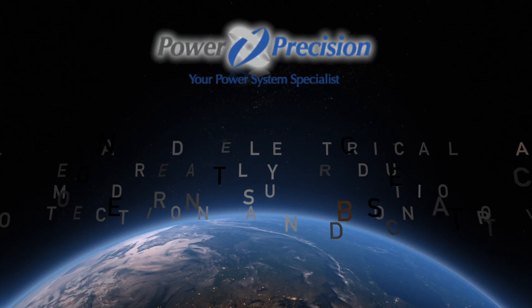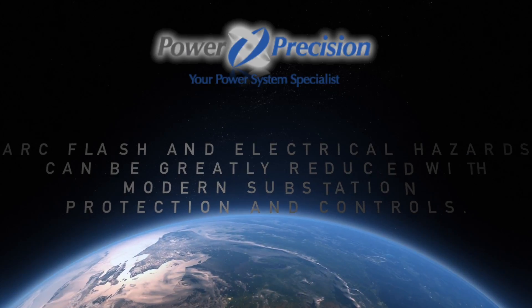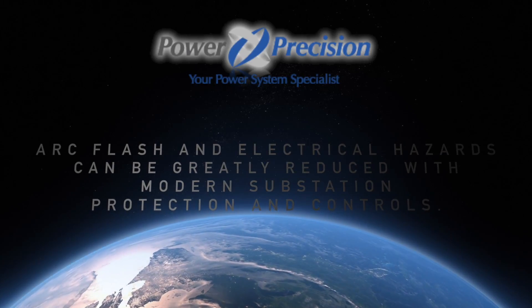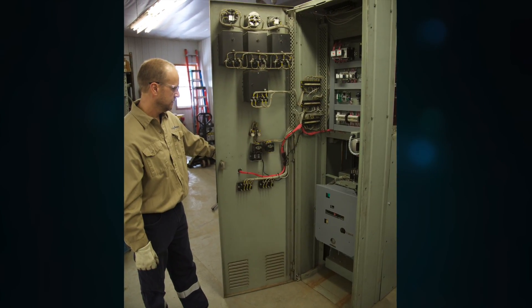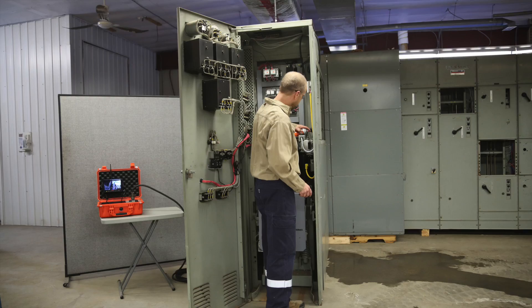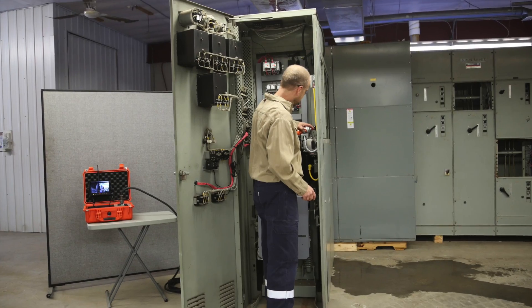Arc flash and electrical hazards can be greatly reduced with modern substation protection and controls. This video demonstrates the operation of a permanently installed remote racking system for a 5 kilovolt GE Magna Blast breaker.